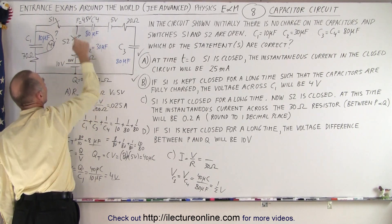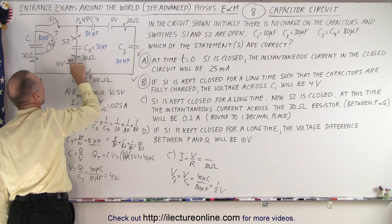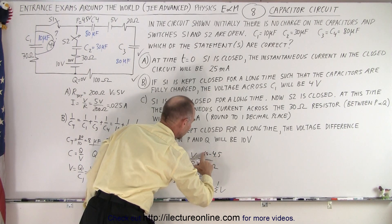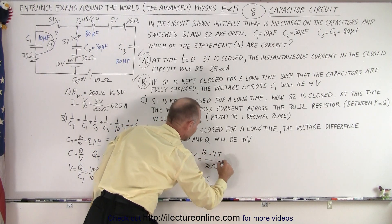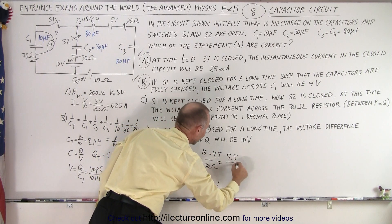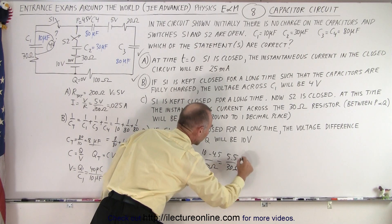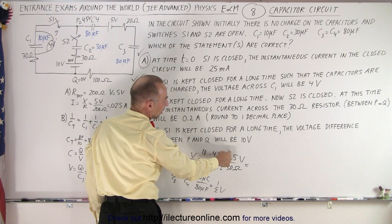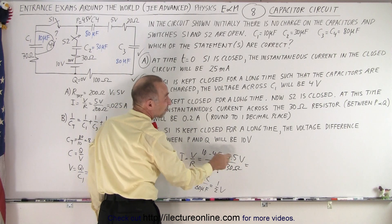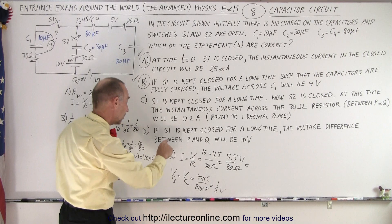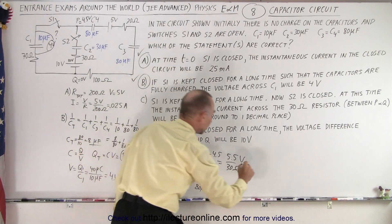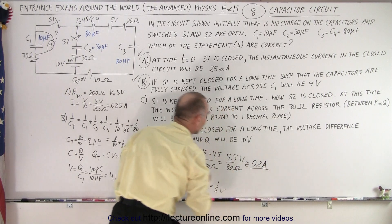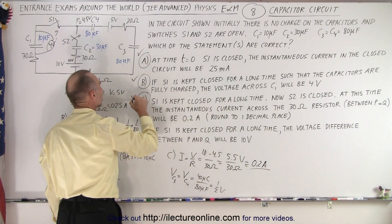So the voltage drop across this resistor is 10 minus 4.5, divided by 30 ohms. And that's roughly, if this was 6 it would be 0.2, 5.5 is about 0.2. Remember they told us round to one decimal place, so that's approximately 0.2 amps. And so it looks like C is correct as well.